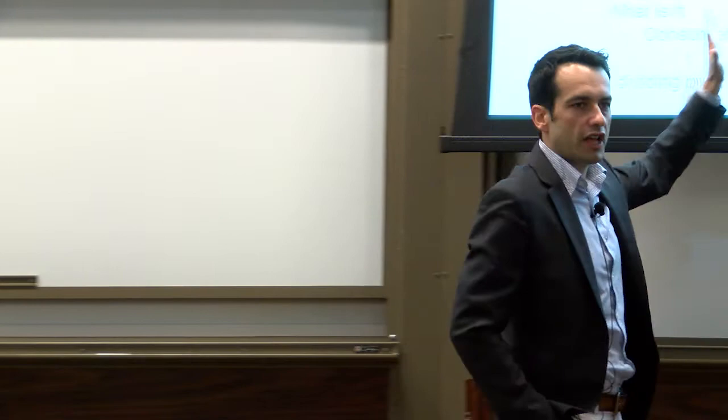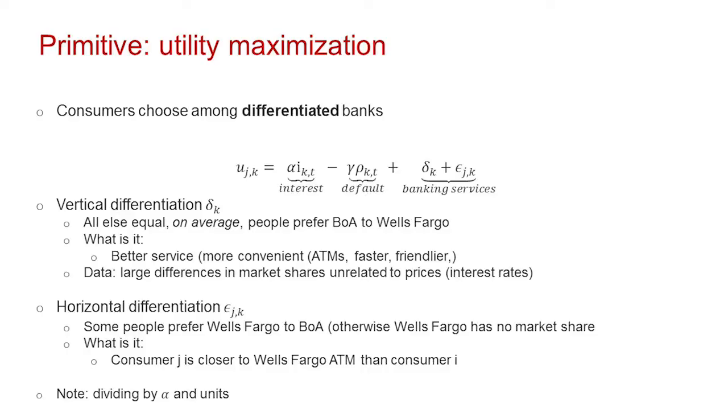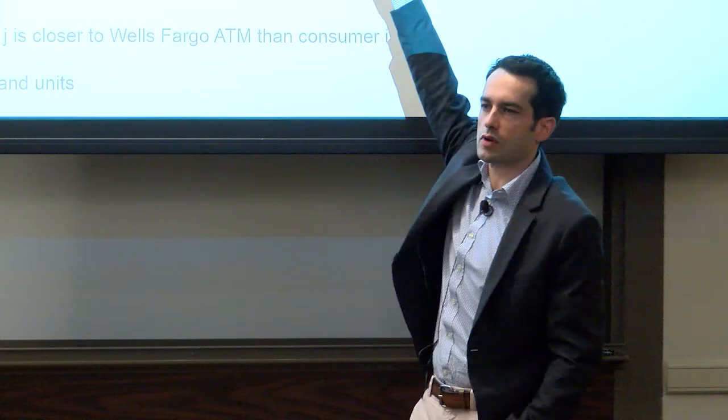Piece two: let's go from individual consumer choice and aggregate up to a demand curve. Things are simple right now — every consumer has the same alpha, the same gamma. The only place where consumers differ is in their epsilons. This is a simple demand system that I'll complicate later by adding heterogeneity, but even this is actually quite useful when you think about the data.